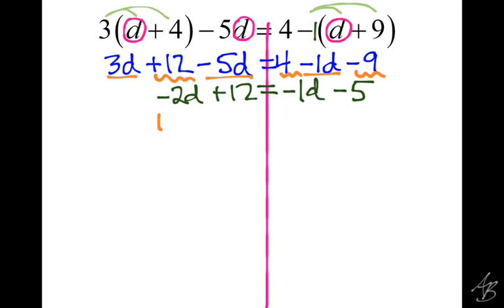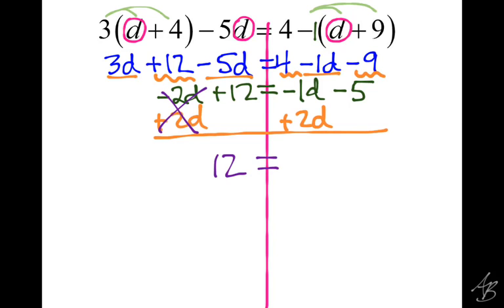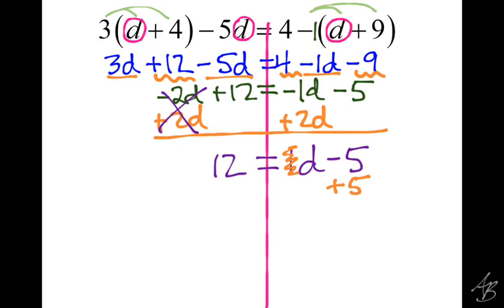We get rid of the negative 2D by adding 2D. If you did it the other way that's okay — you'd still get the right answer, just one more step dividing by a negative. The 2D's cancel, leaving 12 on this side. On the other side, negative 1D plus 2D is positive 1D, and then we have our minus 5. We don't need to take a step to drop the 1 — just leave it as D minus 5. Then we add 5, those 5's cancel, leaving D by itself on the right, and 12 plus 5 is 17.